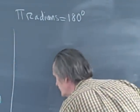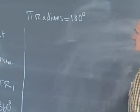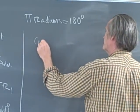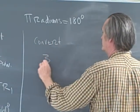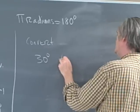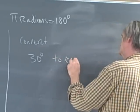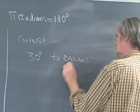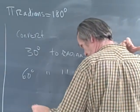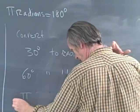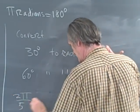Now, when you first deal with angles, somebody is going to ask you to convert, say, 30 degrees to radians, 60 degrees to radians, they'll ask you to convert 2π over 5 to degrees.